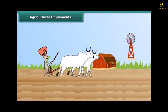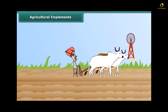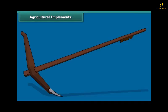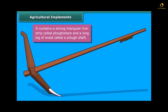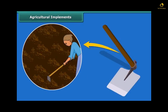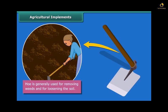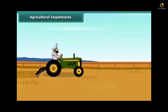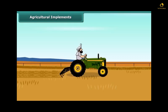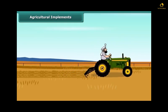Now look at this farmer — he is plowing the field with a tool made of wood. It contains a strong triangular iron strip called a plowshare, and the main part of the plow is a long log of wood called the plow shaft. Another tool used in plowing is a hoe, used for removing weeds and loosening the soil. It has a long rod of wood with a strong, broad, bent plate of iron that works like a blade. Nowadays, plowing is done by a tractor-driven cultivator, which saves both labor and time.